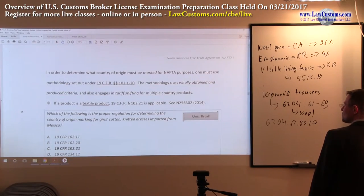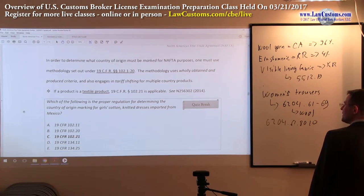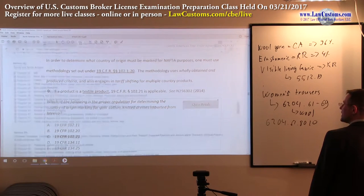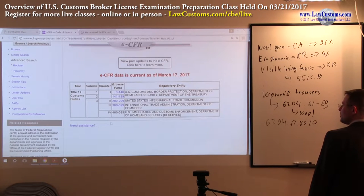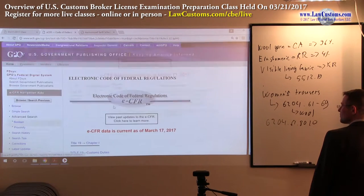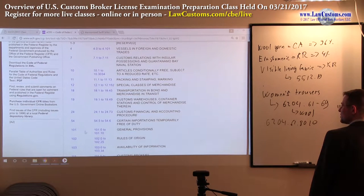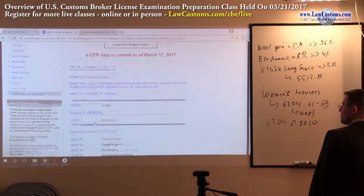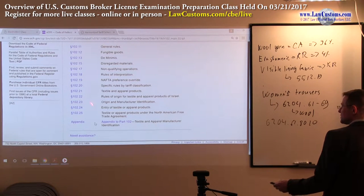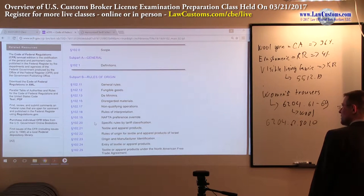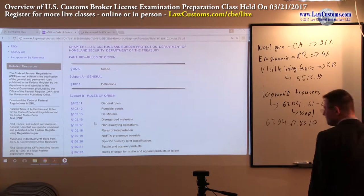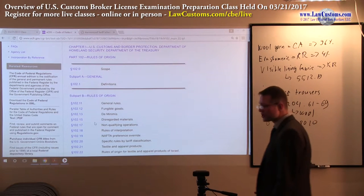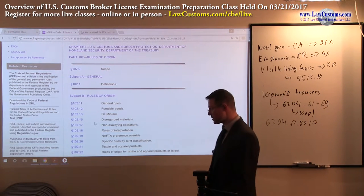Marking is provided in the Code of Federal Regulations, Part 102. Part 102 generally deals with marking requirements, but it is also not a stranger to us because Part 102 also deals with textiles and apparel tariff shifting requirements — the country of origin rules for textiles and apparel. We already talked about general rules of origin applicable to textiles and apparel.